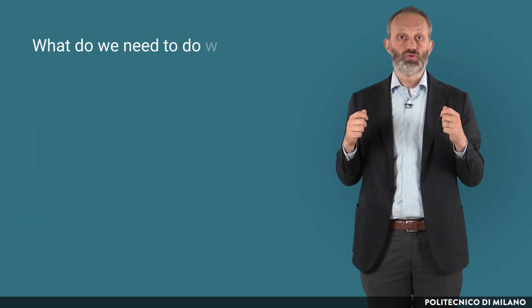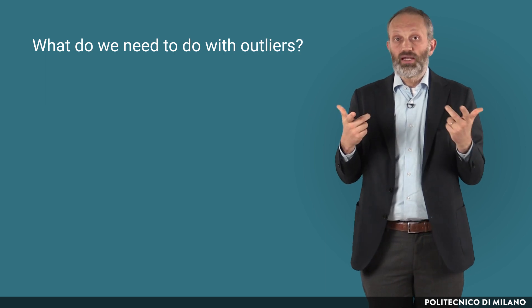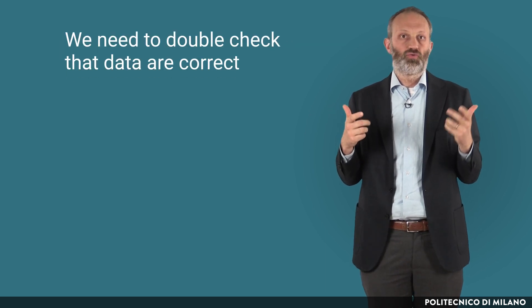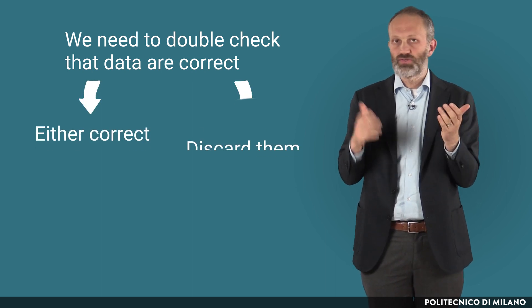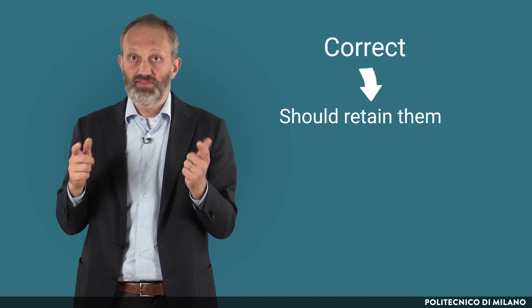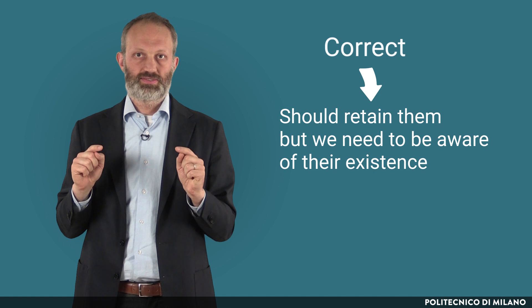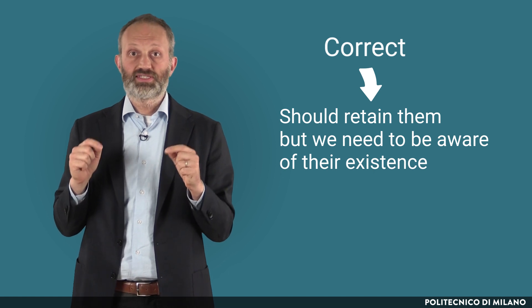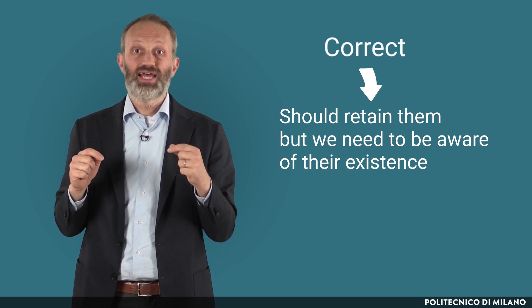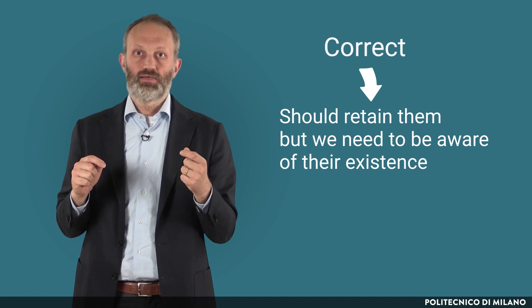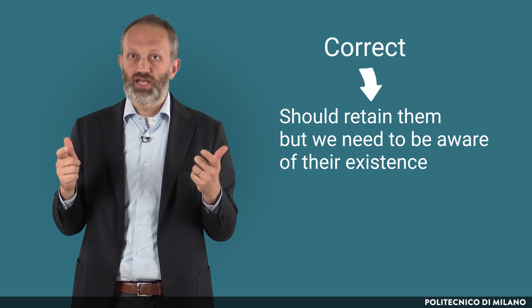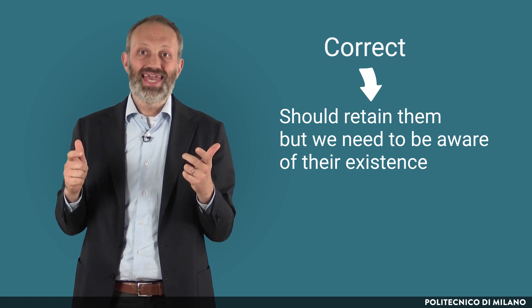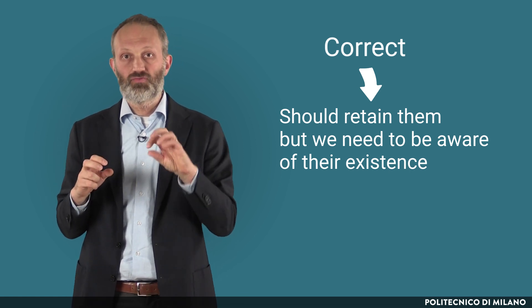What do we need to do with outliers? First of all, we need to double-check that the data are correct — otherwise we definitely need to either correct or discard them. If they are correct, we should retain them, but we need to be aware of their existence. In particular, when the sample size is small, an outlier can affect statistics — both simple ones such as the mean, or more complex ones such as the regression. If this is the case, we may exclude the outlier from the calculation.